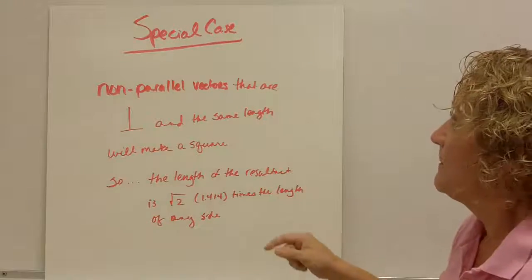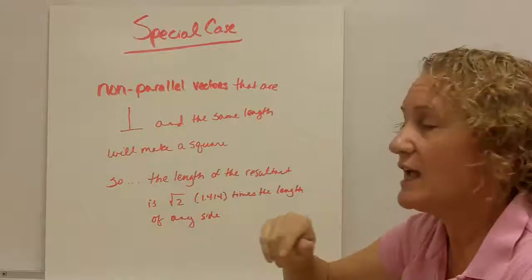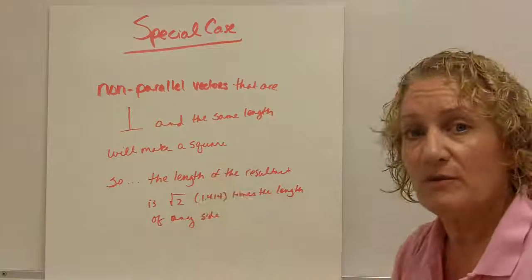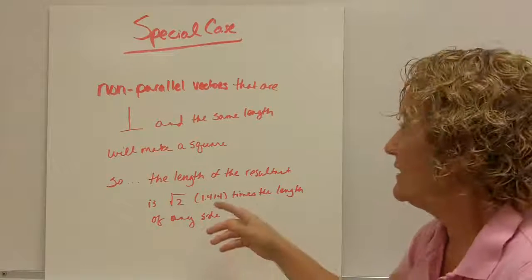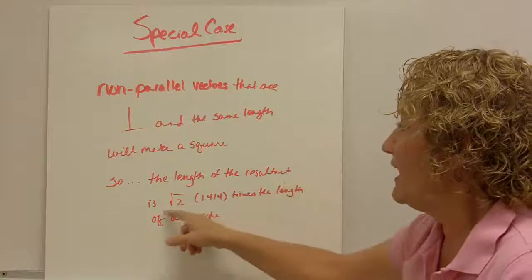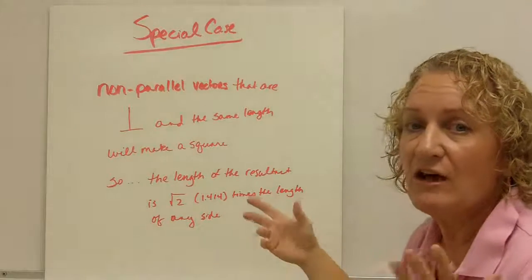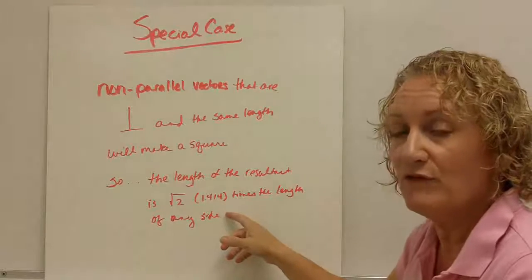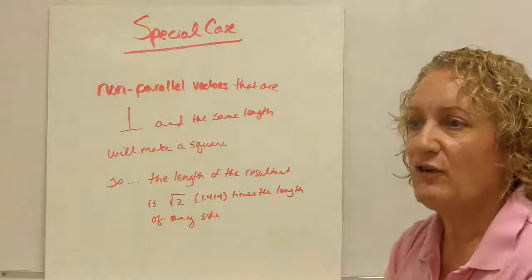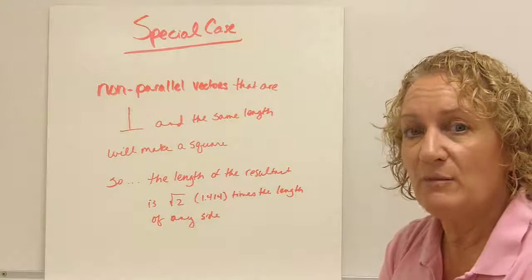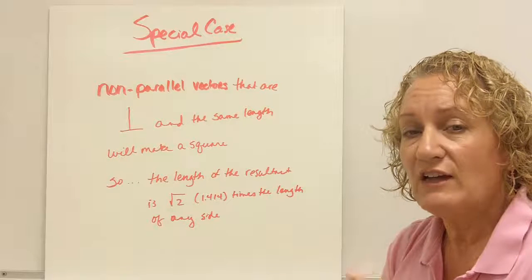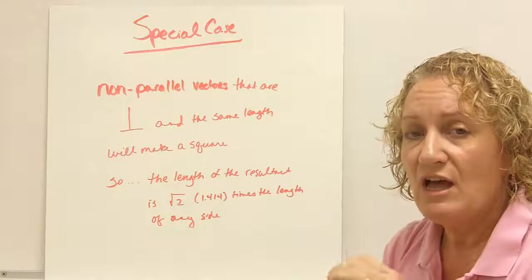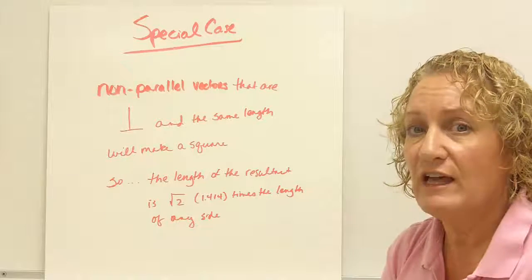The first one basically says if you have non-parallel vectors that are perpendicular, ninety degree angles to one another, and those vectors are the same length, the parallelogram that you construct would be a square. And we know from using Pythagorean that the length of the resultant. So from the diagonal of the square is the square root of 2 times the length of any side. Now all the sides are the same so it doesn't matter what side you pick. Or it's 1.414 times the length of any side. So before you start drawing your parallelograms or doing your tip to tail, take a look at your information. If your vectors are the same in magnitude and at 90 degree angles to one another, just take the length of any one of those vectors, multiply it by 1.414, and you'll have the length of your resultant.